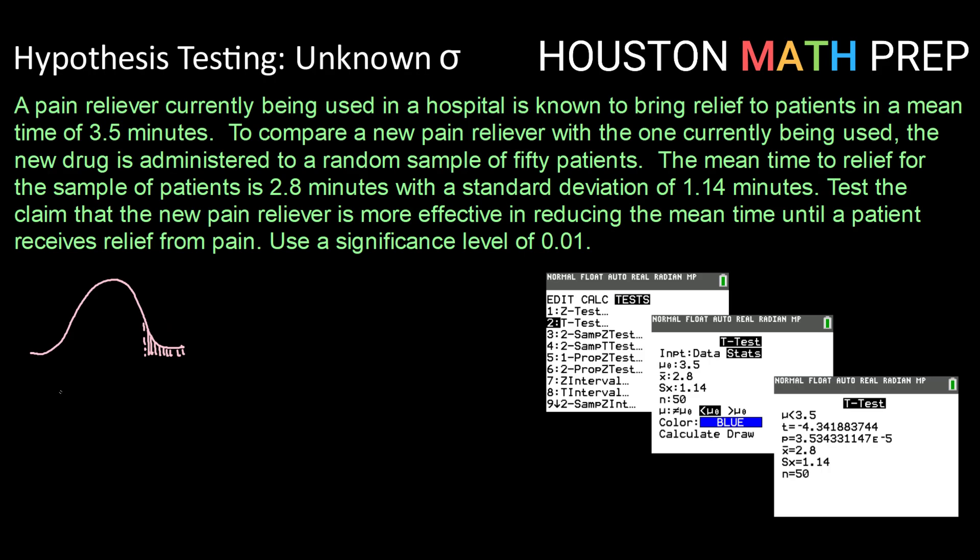So in the end of our hypothesis test we're going to get a p-value or a probability, and that p-value is the probability of getting a sample like the one that you got given that the null hypothesis is true.